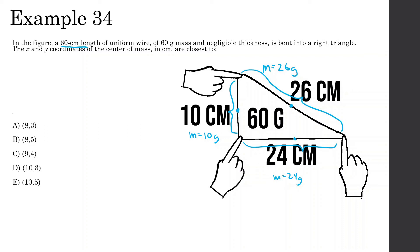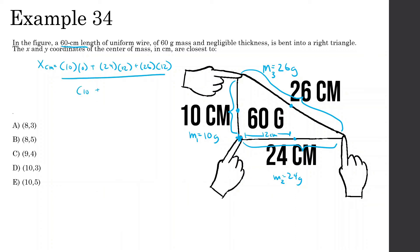For the x-direction, calling the zero point at bottom-left: m1 (10 grams) is at x = 0; m2 (24 grams) is 12 centimeters away; m3 (26 grams) is also at the 12-centimeter mark in x. So x_CM equals (10)(0) plus (24)(12) plus (26)(12), divided by 10 plus 24 plus 26, giving approximately 10 centimeters in the x-direction.